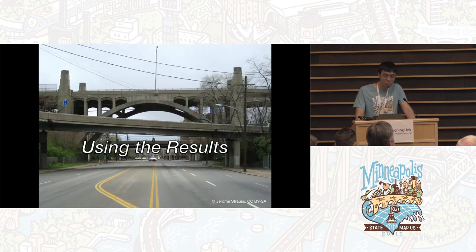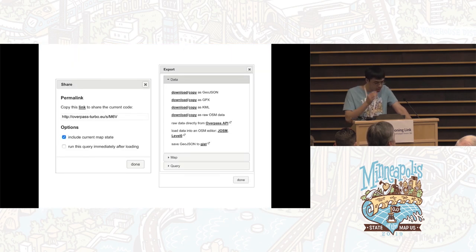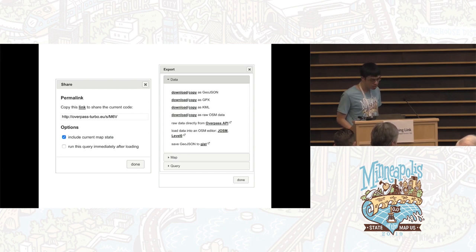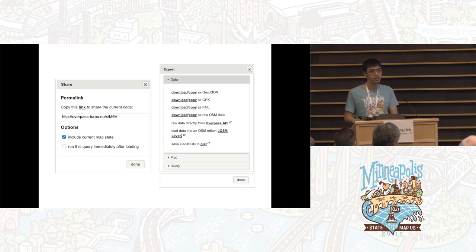You might be wondering how you'd use the results beyond the interactive map you get by default. In the toolbar next to the Run button in Overpass Turbo are the Share and Export buttons. The Share button generates a permalink to the query — really useful if you want to share results with a colleague. These aren't permanent links in terms of results; it's a snapshot of the query, not the results, so it's always fresh.